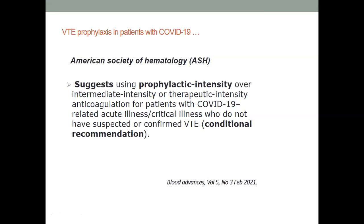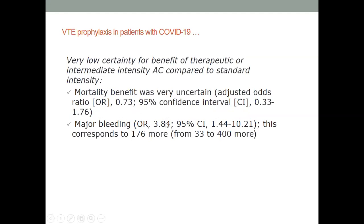Conditional recommendations have implications at different levels for treating physicians, patients, families, and policy makers. The weak recommendation comes from low certainty for benefit of therapeutic or intermediate intensity anticoagulation compared to standard intensity. Mortality benefit was very uncertain — odds ratio 0.73 with a non-significant confidence interval — based on a pulled systematic review of observational studies in the absence of randomized trials at the time, in February 2021.